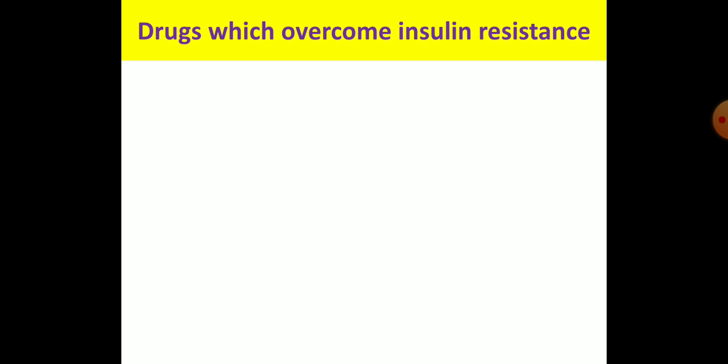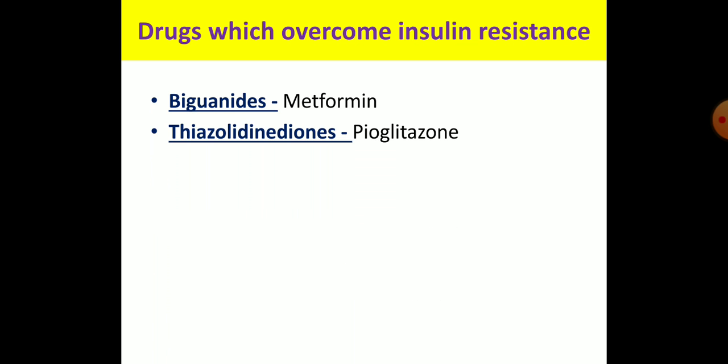The drugs which overcome insulin resistance are called insulin sensitizers, and there are two groups. First, biguanides: fenformin and metformin, though fenformin has been withdrawn due to the serious adverse effect of lactic acidosis. Second, thiazolidinediones, also known as glitazones. The only currently available agent is pioglitazone; troglitazone and rosiglitazone were both withdrawn due to hepatotoxicity.